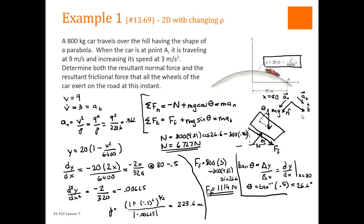To review: we started with the free body diagram, drew our normal-tangential directions, wrote our force equations, and noticed we didn't have all the information we needed. We found a_n and a_t from their kinematic definitions, then found theta and rho from the derivatives of the expression for the curve, which gave us our solution.